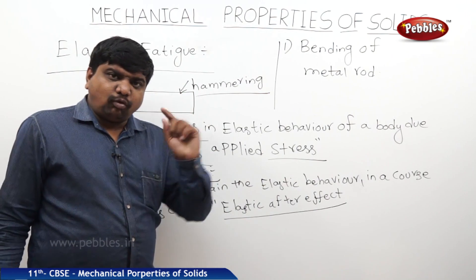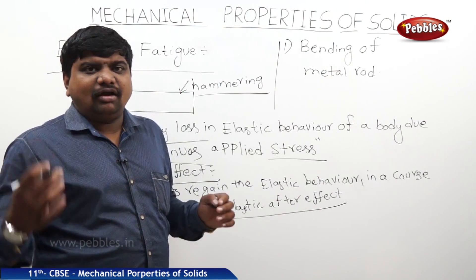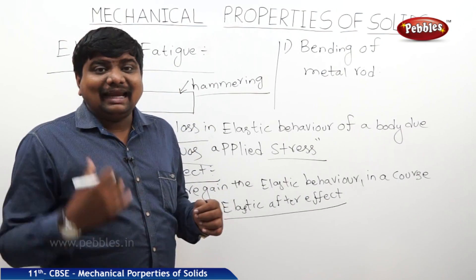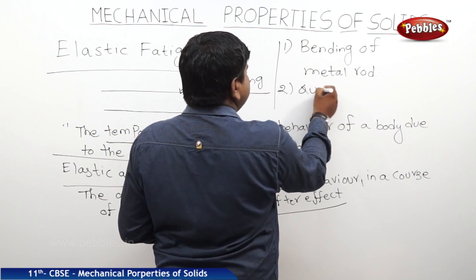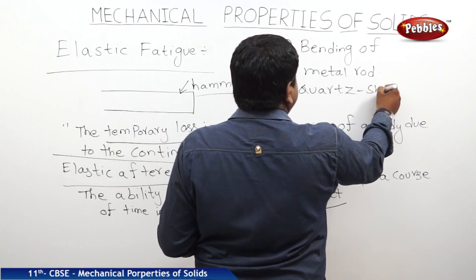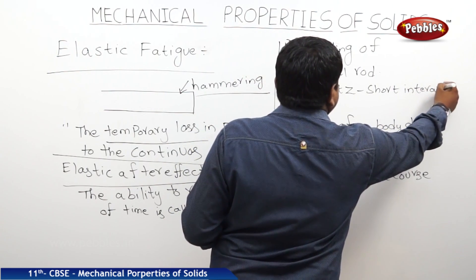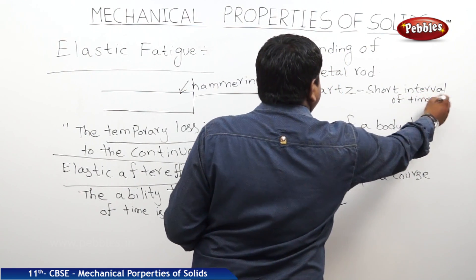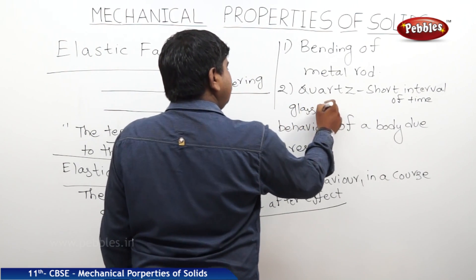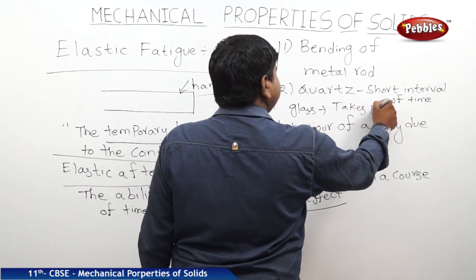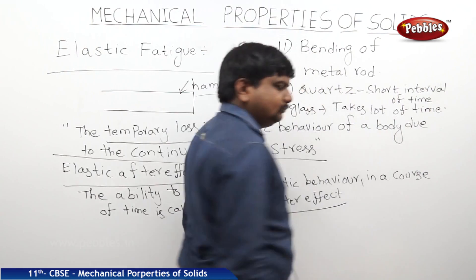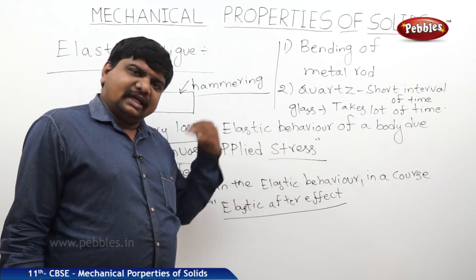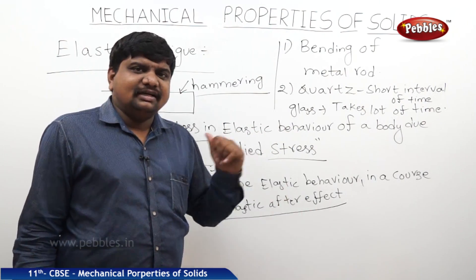This is called elastic after effect. See the examples: quartz crystal. Nowadays we use wrist watches, all with quartz technology. The quartz crystal regains its elastic behavior very quickly, while glass takes a lot of time. So like this we can understand these two concepts. Some objects have no possibility to regain the elastic state because of the complete stress — they remain in a permanently deformed state.